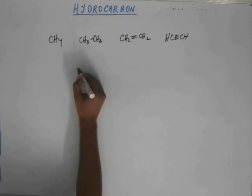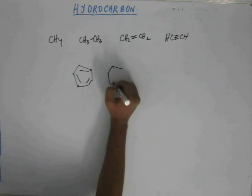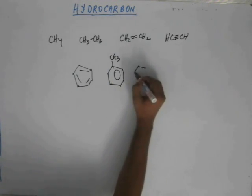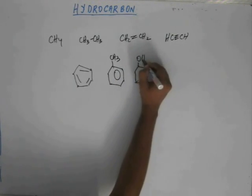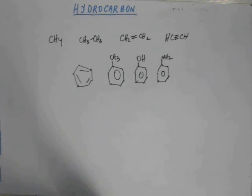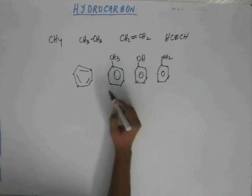There is one class of hydrocarbon which includes benzene and compounds like toluene, phenol, aniline and the list is long. These are the class of hydrocarbon which have a cyclic ring and at least one ring is aromatic ring. These are called arenes. Broadly, these are the four classes of hydrocarbons which we have to study: alkanes, alkenes, alkynes and arenes.